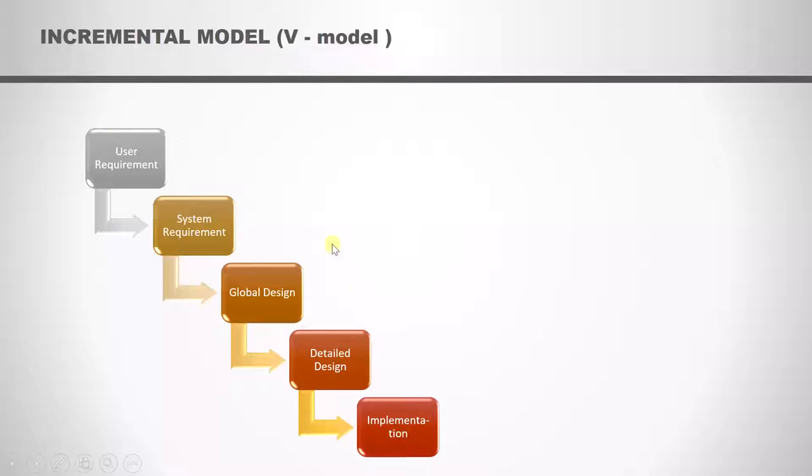These are the steps in this development activity. You get the user requirement, create the system requirement, develop the global and detailed design and finally you implement the code. Now once the implementation is over, the software is ready.